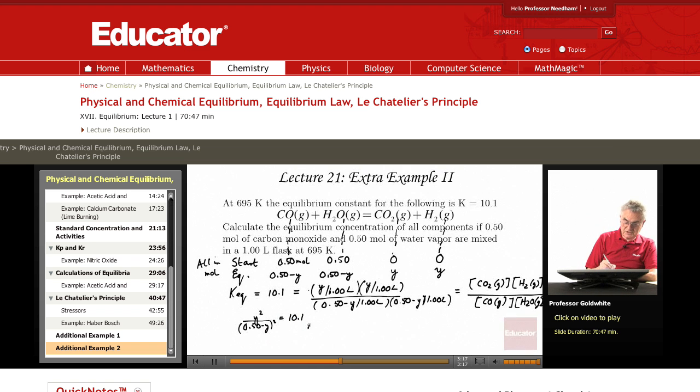Once again we can take the square root in this case. And y over (0.5 minus y) equals the square root of 10.1, which is 3.18. We'll put in one more figure than is significant but we'll round it off at the end. Solving that for y, y equals 0.38.